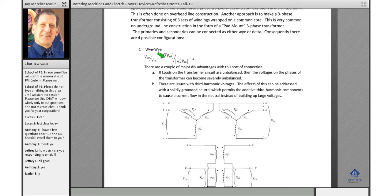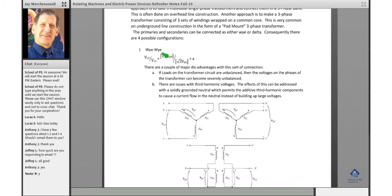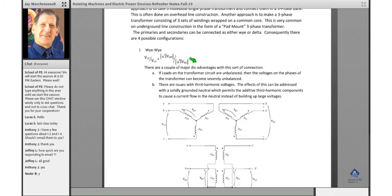So V line primary over V line secondary is equal to root three times V phase primary over root three V phase secondary. So that root three term will drop out. And V line primary and V line secondary are different by the turns ratio.